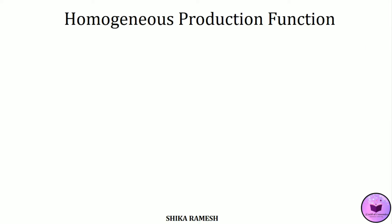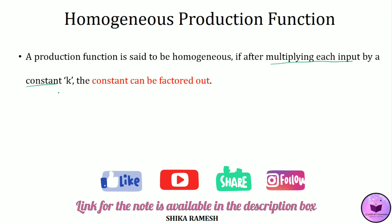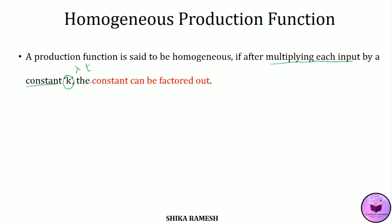A production function is said to be homogeneous if, after multiplying each of the inputs in the production function by a constant — it can be k, lambda, t, etc. — that constant can be factored out. If it can be factored out, then that production function is said to be homogeneous.